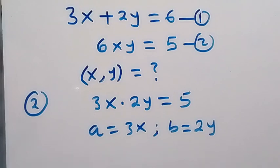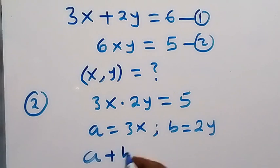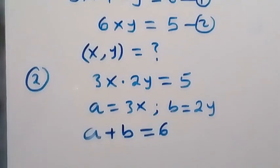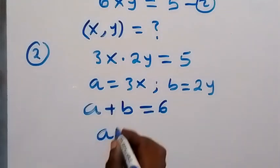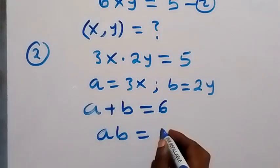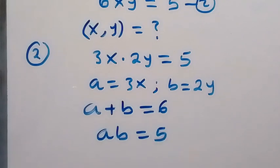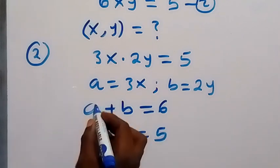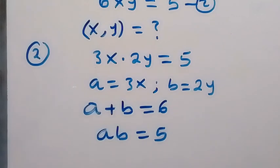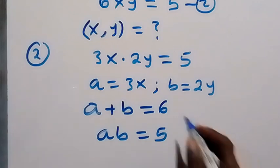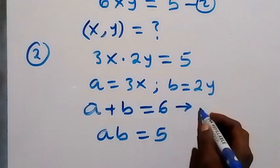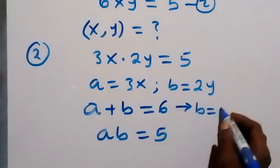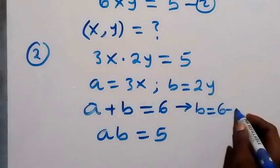We can now rewrite the two given equations in terms of a and b. Equation 1 becomes a plus b equals 6, and equation 2 becomes a multiplied by b — that's ab equals 5. From the first equation, we make b the subject, so b equals 6 minus a.